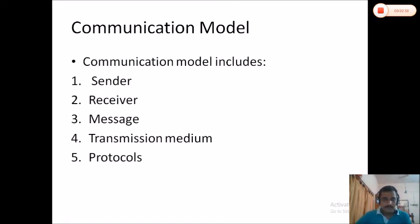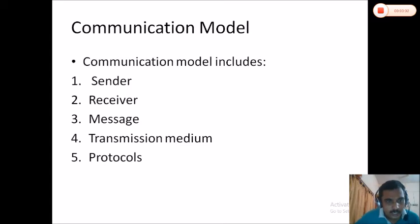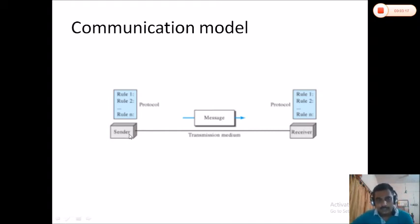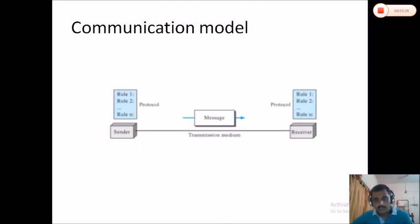The communication model specifies what components are needed in a communication to make it a successful one. There are five components: sender, receiver, message, transmission medium, and protocols. The sender is the device which is capable of transmitting data — it can be a laptop, a mobile phone, a PDA, or a desktop computer. The sender is responsible to send the data.